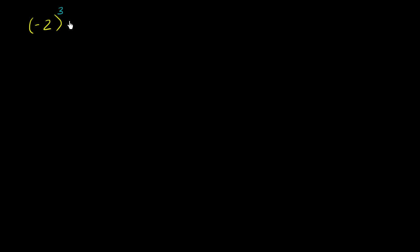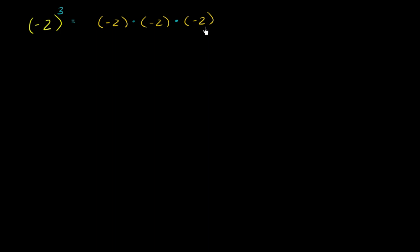So if I had the number negative 2 and I want to raise it to the third power, this literally means taking three negative 2's and then multiplying them. Negative 2 times negative 2 is positive 4, and then positive 4 times negative 2 is negative 8. So this would be equal to negative 8.